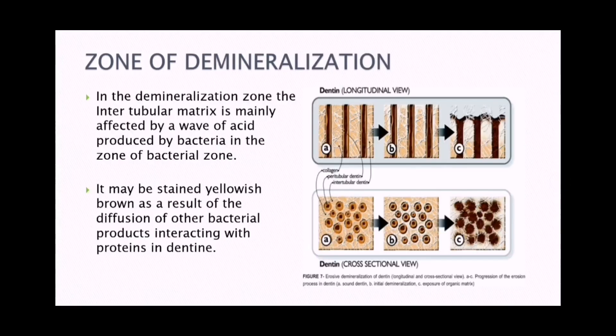In the zone of demineralization, the intertubular matrix is mainly affected by a wave of acid produced by the bacteria in the zone of bacterial invasion. Bacteria are present in the zone of invasion and they produce acid, which goes into the zone of demineralization. This zone may be stained yellowish-brown as a result of diffusion of bacterial products interacting with the protein of the dentine.